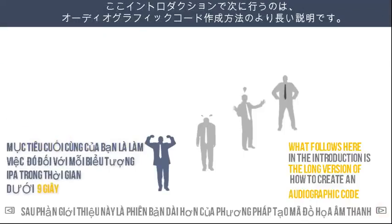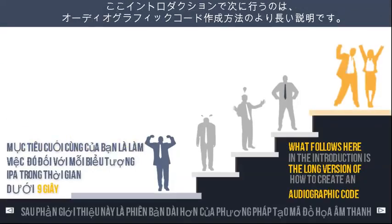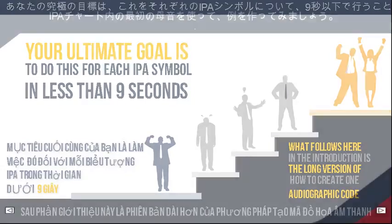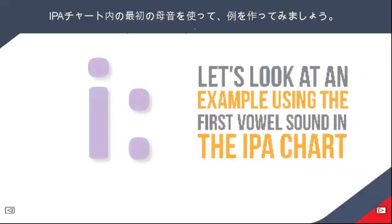What follows here in the introduction is the long version of how to create an audiographic code. Your ultimate goal is to do this for each IPA symbol in less than 9 seconds. Let's look at an example using the first vowel sound in the IPA chart.